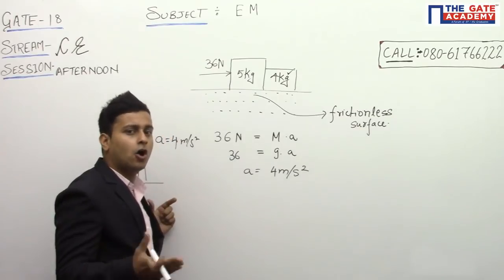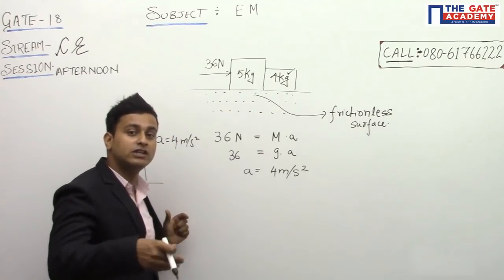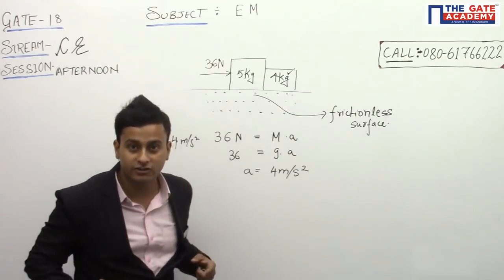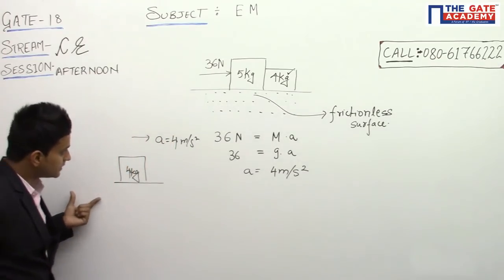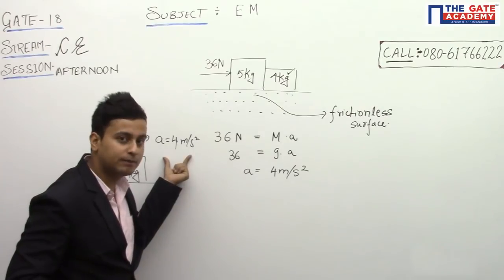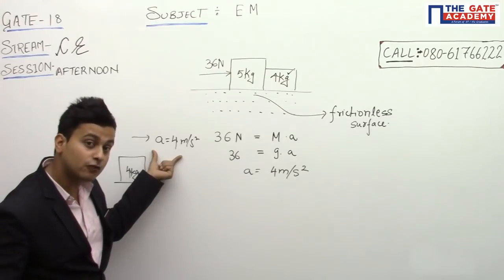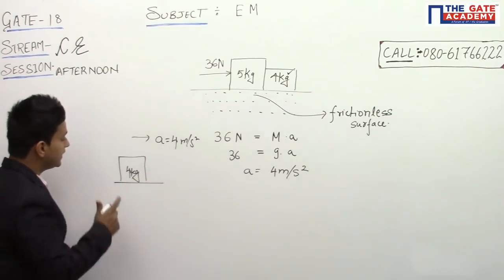That will also be in equilibrium or in an accelerated frame. Newton's law can be applied and net force can be equated to mass into acceleration. So this a equals 4 meters per second squared. This is a body of 4 kg, so it is moving at an acceleration of 4 meters per second squared, so there should